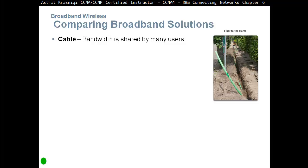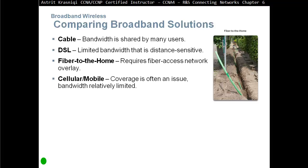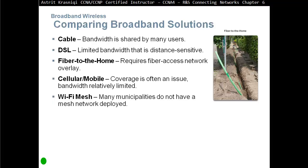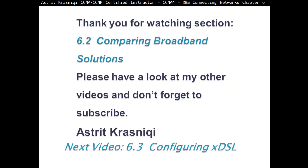Comparing broadband solutions: cable's disadvantage is that bandwidth is shared by many users. DSL's disadvantage is that it is distance-sensitive. Fiber to the home requires a fiber access network overlay. Mobile's disadvantage is that coverage is often an issue and bandwidth is relatively limited. Wi-Fi mesh disadvantage is that many municipalities do not have a mesh network deployed. WiMAX bitrate is limited to 2 megabits per second per subscriber and the cell size is 1.25 miles. Satellite is expensive and limited in capacity per subscriber. Thank you for watching section 6.2 comparing broadband solutions — please subscribe and see you in the next video, 6.3 configuring xDSL.